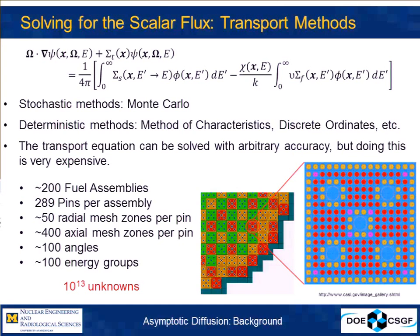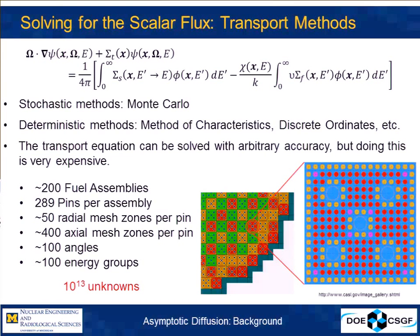How do we solve for the scalar flux? We have the transport equation in slightly simplified form — a balance equation with leakage and loss due to collision on the left side, and gains from neutrons scattering into some point in phase space and neutrons born from fission on the right. We can solve this to an arbitrary degree of accuracy using stochastic or deterministic methods, but doing so is very expensive. For example, a pressurized water reactor has about 200 fuel assemblies, 289 pins per assembly. If we discretize that with 50 radial mesh zones per pin, 400 axial zones, 100 angles, and 100 energy groups, that's already 10 to the 13th unknowns — and this is only to get the flux, not coupled to a thermal hydraulics code.